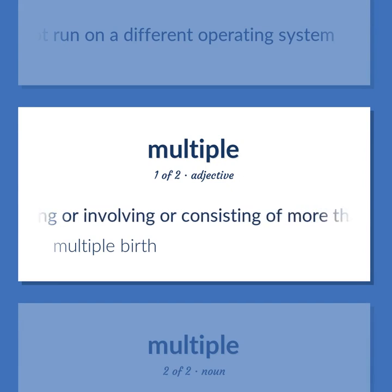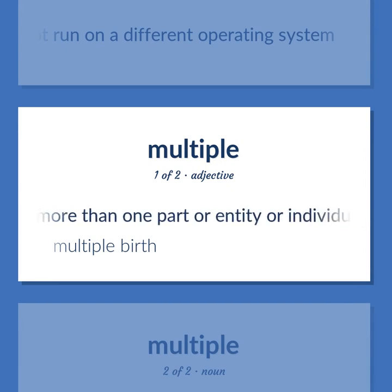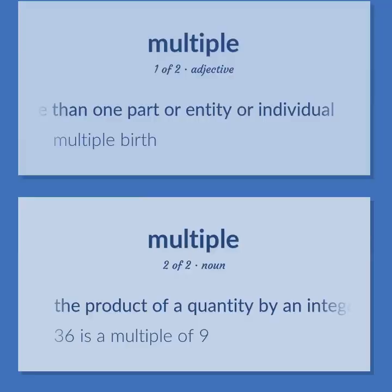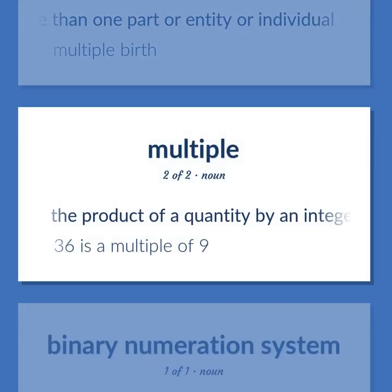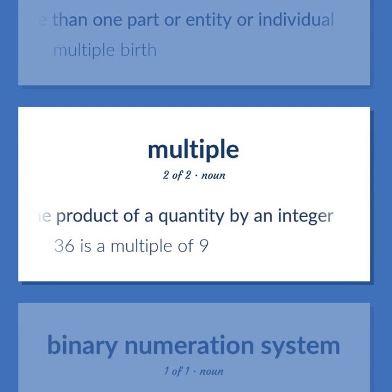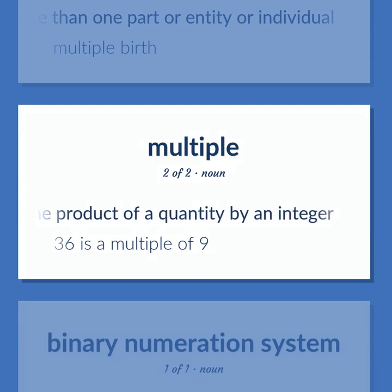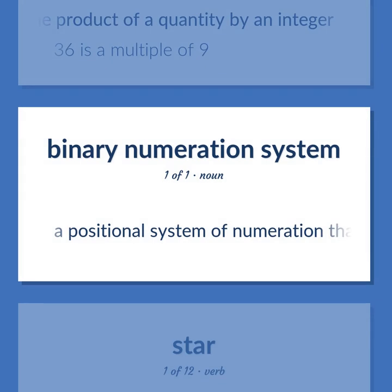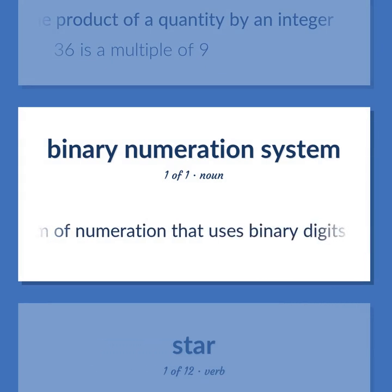Multiple: Having, involving, or consisting of more than one part, entity, or individual. Multiple birth. The product of a quantity by an integer — for example, 36 is a multiple of 9.